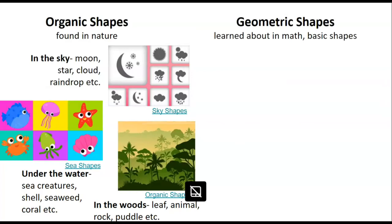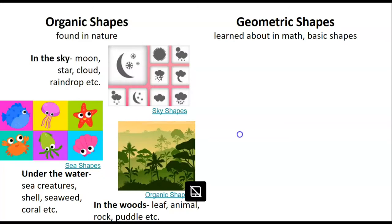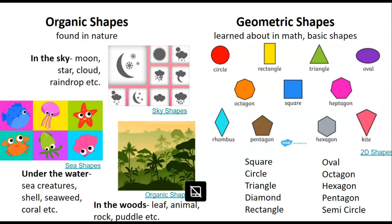And then we have our geometric shapes — those are our basic shapes. Think back to kindergarten: what shapes did I teach you about then? Those are probably the geometric shapes. We learn about those shapes in math, and they include squares, circles, triangles, diamonds, rectangles, ovals, octagons, hexagons, pentagons, semicircles, etc.